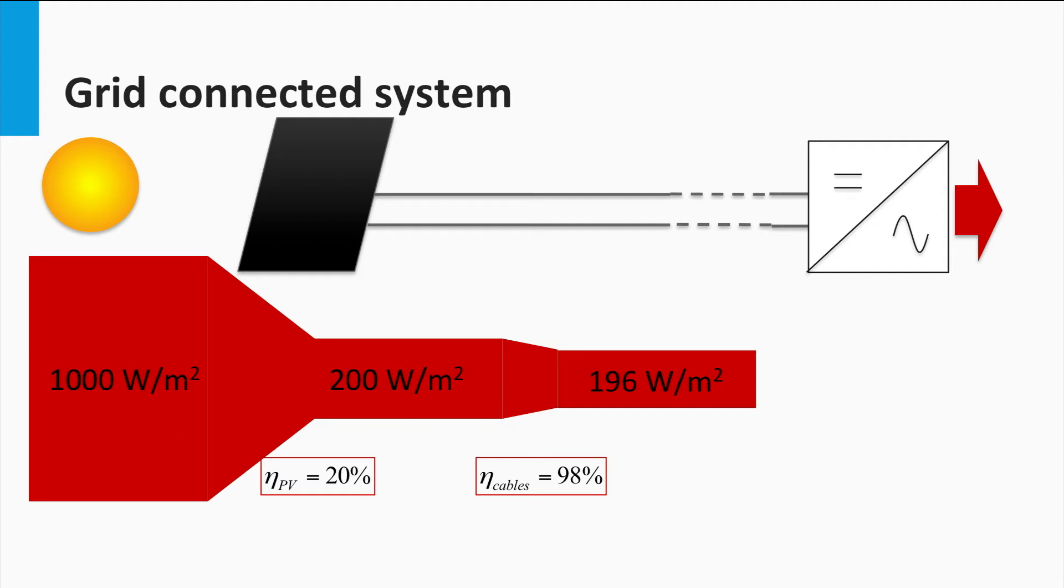usually the efficiency of the inverter is dependent on the power at which it operates. It is seen from practice that the inverters typically reach the rated efficiencies at around 50% of the rated operating power. For the sake of simplicity, we shall assume an average efficiency of 95% for the inverter.